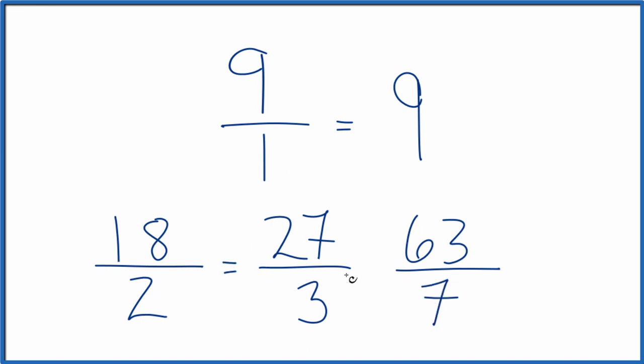And all of these are equivalent fractions. Divide 63 by 7, 27 by 3, 18 by 2, or 9 by 1, you get the whole number 9. That's because these are all equivalent fractions to 9. This is Dr. B. Thanks for watchin'.